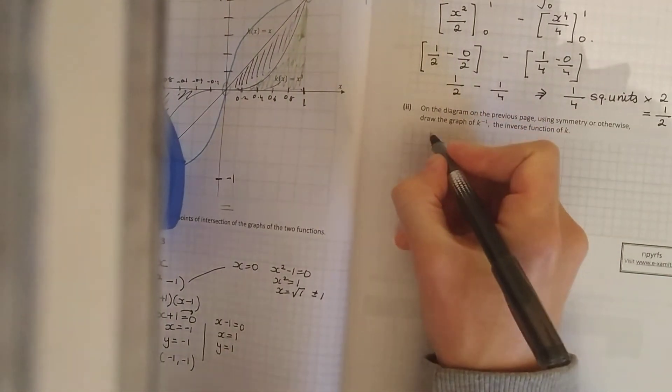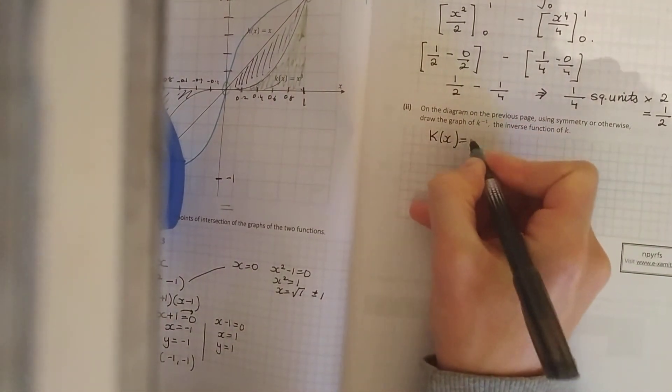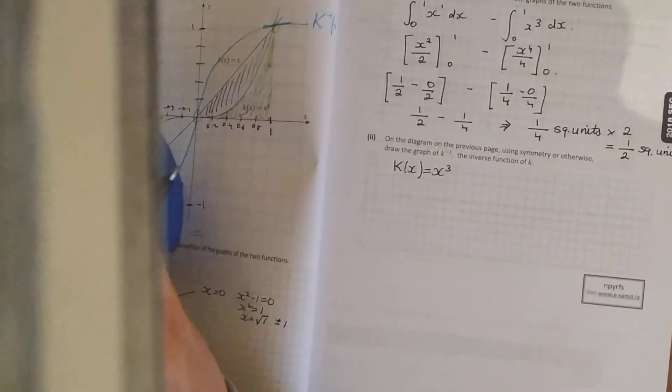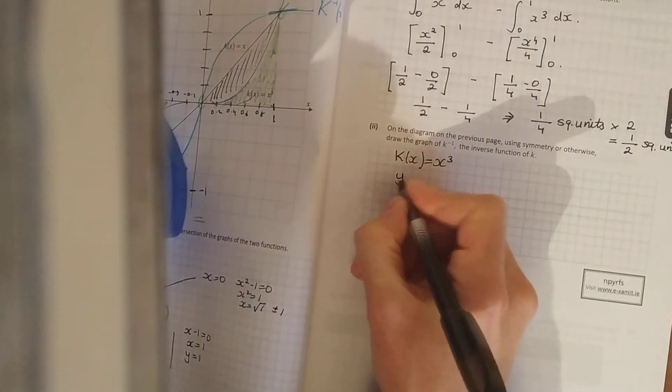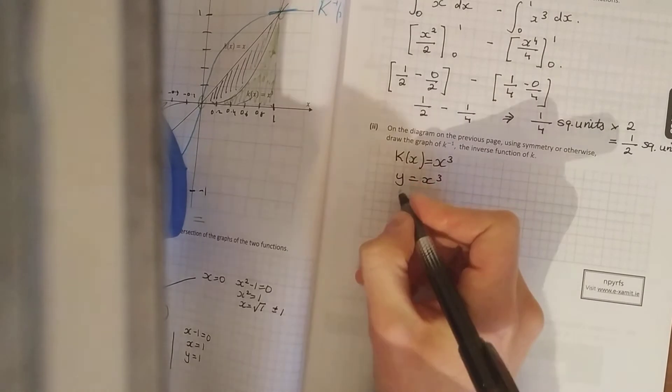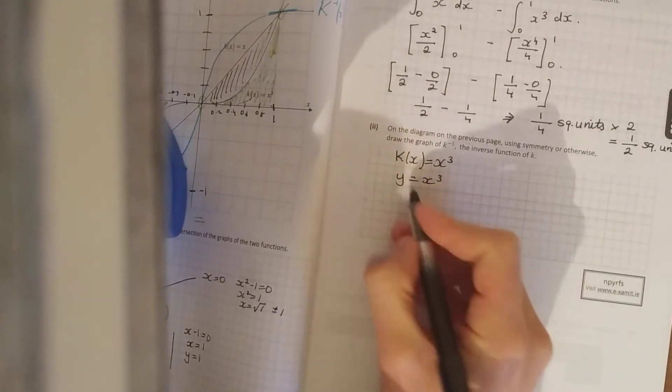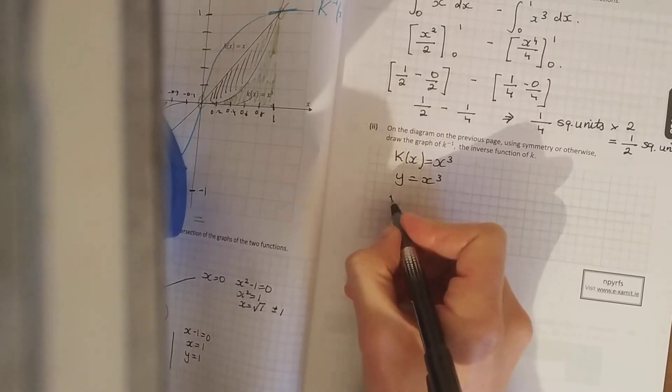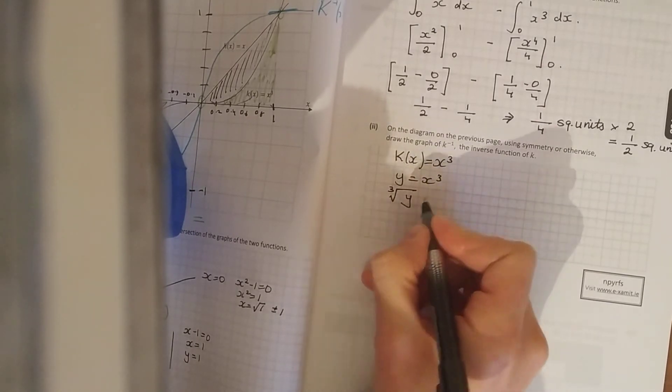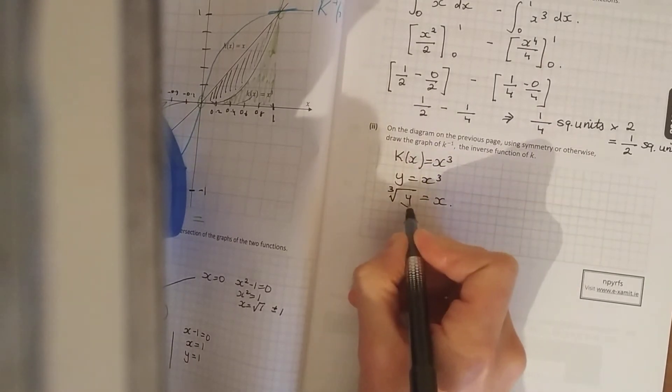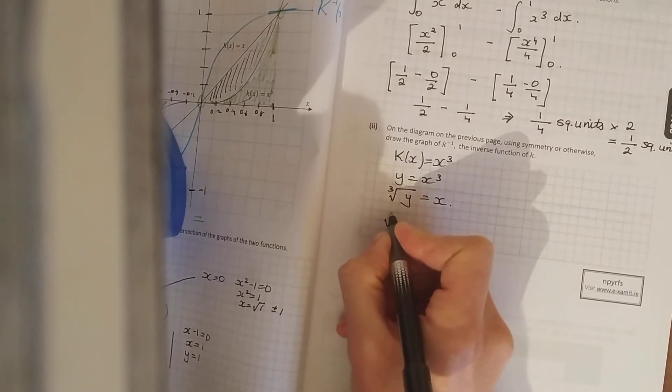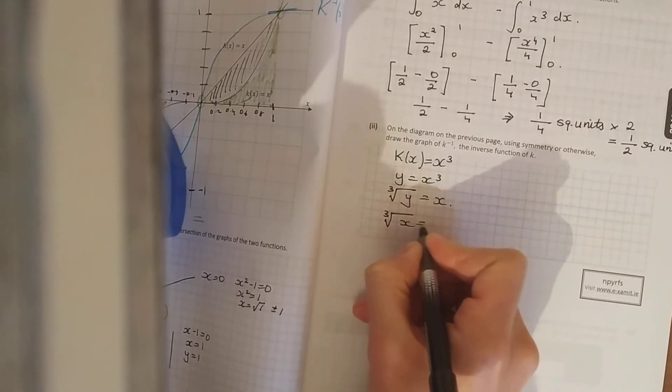So here your graph is k(x) = x³. What we say there is y = x³. So h(x), k(x), g(x) and so on. So the cube root of y is equal to x, and then you replace the y with the x. So that's kind of the standard procedure to find your inverse.